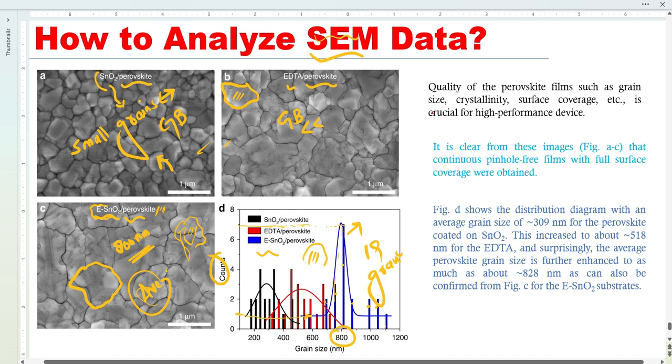Now let's get started on how to describe these SEM images in a research paper. We can write this sentence: Quality of the perovskite film, such as grain size, crystallinity, and surface coverage, is crucial for high-performance devices. This is very important. If you do not have fully covered surfaces, there will be leakage of current, so there will be instability.